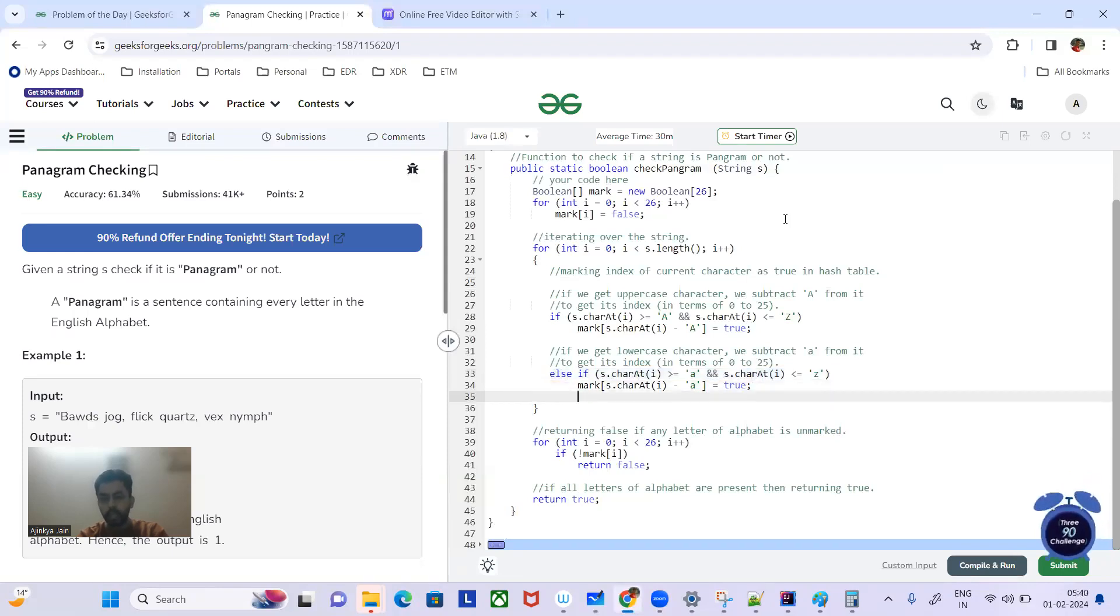If it is small case, then we are deducting the ASCII of small a. And then what we are doing is we are iterating through the array. Wherever it is false, we are returning false, otherwise it's true.